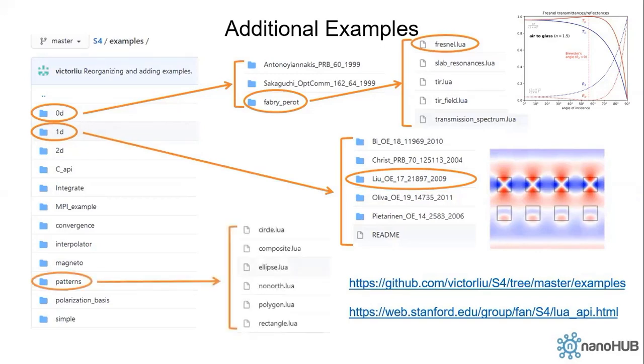In the previous example, we talked about how to set rectangular patterns. If you go to the pattern folder, you can learn how to add different types of patterns like circular patterns or composite patterns.